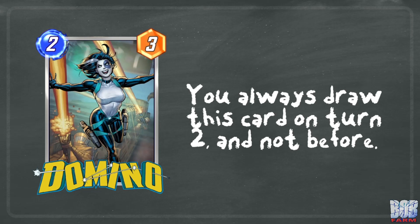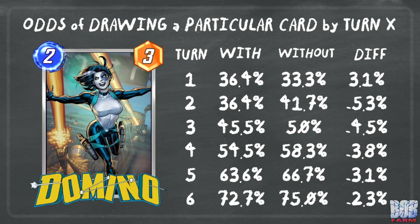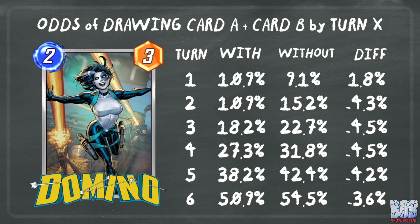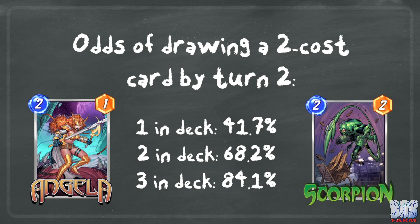Now moving on, let's take a look at Domino, a 2 energy 3 power card that says you always draw this on turn 2 and not before. Similar to Quicksilver, we see a general decrease in consistency outside of turn 1 where you actually get a slight boost. Turn 1 and turn 2 have the same odds with Domino, as turn 2 is the turn we lose the potential to draw any other card. From turn 3 on, we see the same decrease in consistency as Quicksilver, whether an individual card or a combination of cards. We can take a quick look at the odds of drawing a 2 cost card by turn 2 under normal circumstances: with 1 in the deck it's 41.7%, 2 brings it up to 68.2%, and with 3 in the deck you're up to 84.1%. You may not even need a 2 cost card to play on turn 2, as it can fill out your curve on a later turn, and are great on turn 6 with a 4 cost tech card like Shang-Chi or Enchantress.